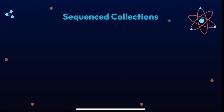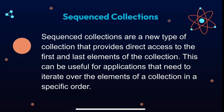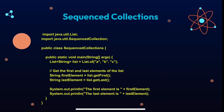Next is sequence collections. Sequence collections are a new type of collection that provide direct access to the first and last elements of the collection. This can be useful for applications that need to iterate over elements in a specific order. Here is an example where we can use List.getFirst() and List.getLast() to get elements from the list.